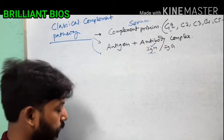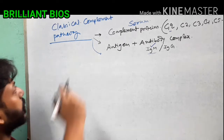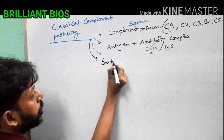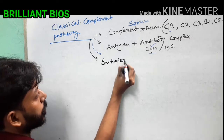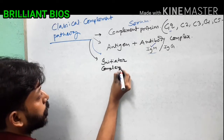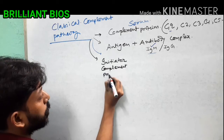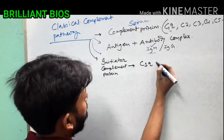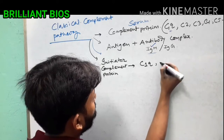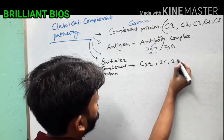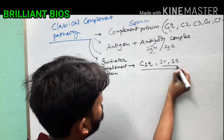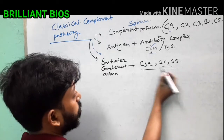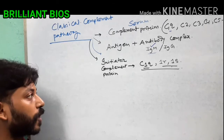For the classical complement pathway, the initiator complement protein is C1Q. This C1Q is associated with C1R and C1S, which are enzymes. These two enzymes help the initiator protein to function.